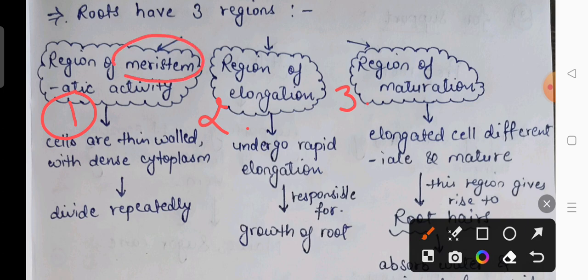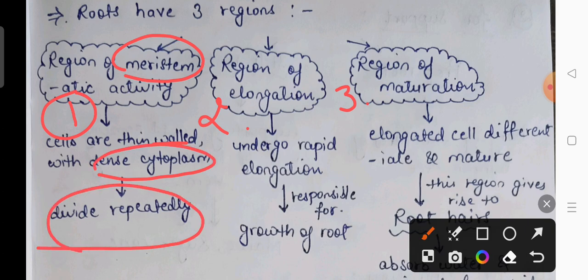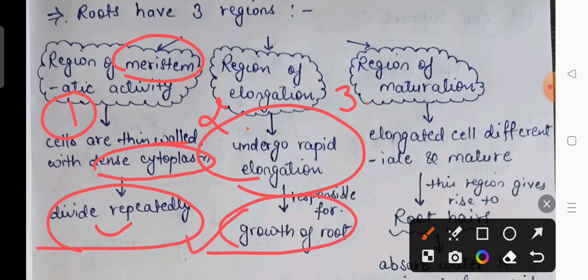In the region of meristematic activity, meristematic tissue is found — these are dividing cells that continuously divide and form new cells. The cells in this region are thin-walled with dense cytoplasm. Just above this area is the region of elongation, where rapid elongation — that is, growth — is seen. This region is responsible for root growth.